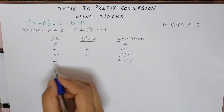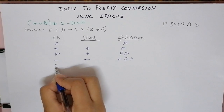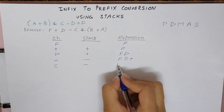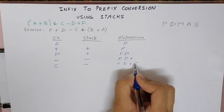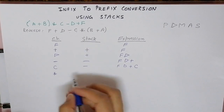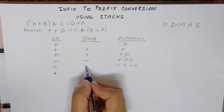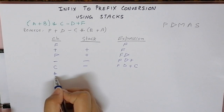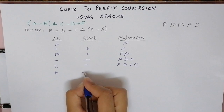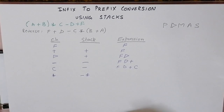Next we encounter C, which becomes part of our final expression. Then we encounter the multiplication operator. In the stack we already have minus, which has lower precedence than multiplication. Since there is no problem having a higher precedence operator on top, multiplication will go on top of minus in the stack.